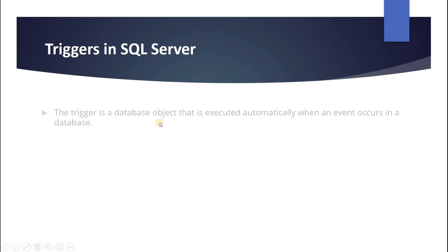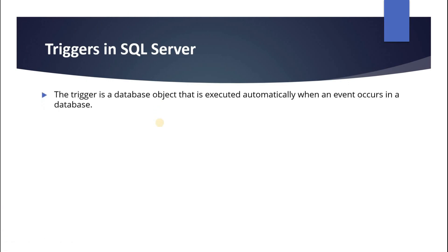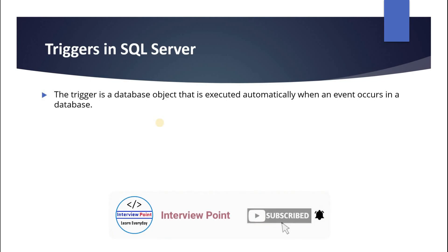A trigger is a database object that is executed automatically when an event occurs in a database. Whenever we do any operation in SQL Server — like insert a record, update a record, or delete a record — the trigger procedure will be executed. So whenever any event occurs like INSERT, UPDATE, or DELETE, this trigger gets fired automatically.